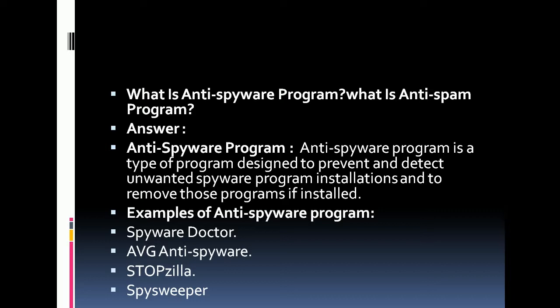What is an anti-spyware program? Anti-spyware is a type of program designed to prevent and detect unwanted spyware installations and to remove those installed programs. Some examples of anti-spyware programs include Spybot, Ad-Aware, and Spy Sweeper. This concludes our interview questions and answers session on malware. Thank you very much for watching.